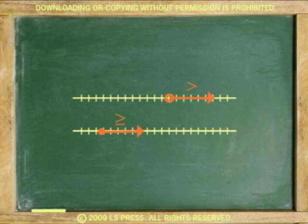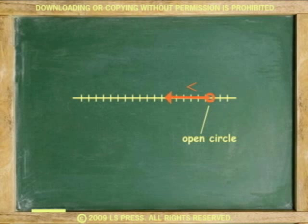Notice the difference in plotting greater than and greater than or equal to. When greater than or less than are plotted, the circle marking the limit of the answer is open. When the equal is added, the circle is filled.